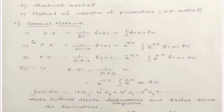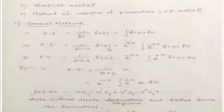The rules for the general method: Rule 1 — PI = 1/D · f(x), meaning you simply integrate f(x) with respect to x. Rule 2 — PI = 1/(D−a) · f(x) = e^(ax) · ∫e^(−ax) f(x) dx. Rule 3 — PI = 1/(D+a) · f(x) = e^(−ax) · ∫e^(ax) f(x) dx.